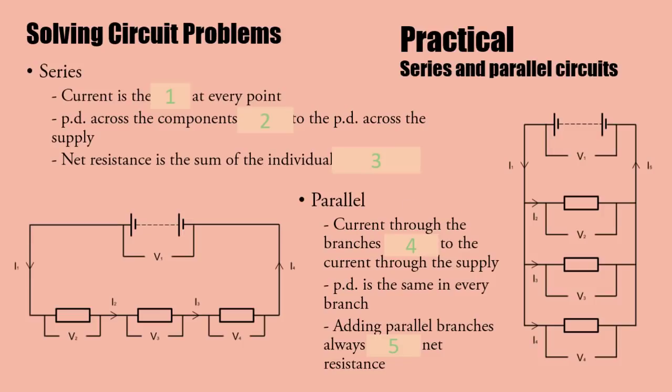Solving circuit problems is about remembering how all the different parts of circuits relate to each other. In a series circuit, current is the same at every point. The PD across components adds up to the PD across the supply. Voltage is energy per unit charge - each component uses up some of the energy. In parallel, the current adds up through the branches. The potential difference is the same in every branch. If you add parallel branches, you always reduce overall resistance.